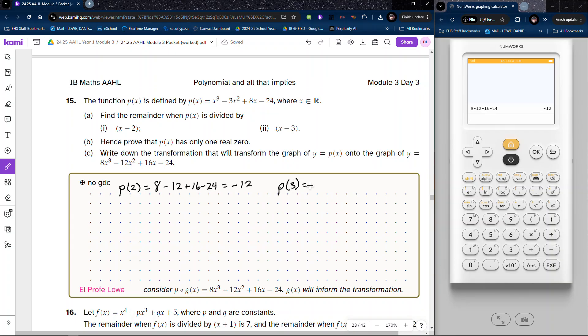Then remainder when divided by 3: P of 3. 3 cubed is 27, then we have minus 27, then plus 24 minus 24, and so that's equal to 0. So that means that x minus 3 we know for sure is a factor.